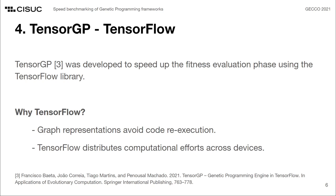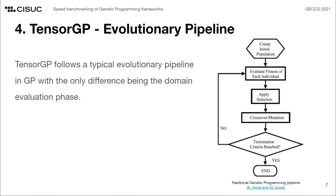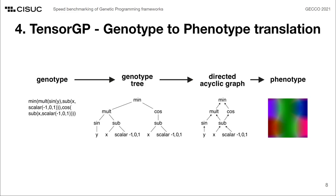One of TensorFlow's design goals is to make the distribution of computational efforts seamless, which avoids the need for several hardware-specific implementations. Most genetic programming systems described in literature follow a typical evolutionary pipeline. TensorGP follows this very same approach, with the only difference being the evaluation of the fitness case domain which is vectorized using tensor operations. What differentiates TensorGP from other genetic programming engines lies in the genotype to phenotype translation pipeline.